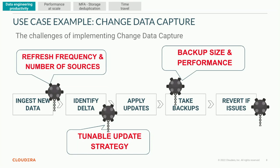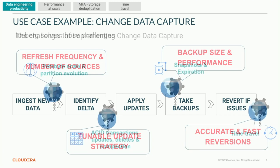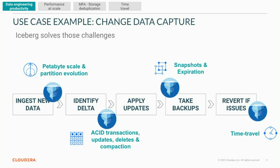There are a few landmines in the way. When ingesting new data, the refresh frequency and number of sources are exploding, making it very complex to get all that data ingested properly. Having a tunable update strategy to keep up with these changes is also a challenge. And when taking backups, that backup size is exploding, impacting performance. If we do get issues, we have to do complex manual tasks to roll back. The power of Iceberg means we can now move to petabyte scale, and with partition evolution, keep track of how data is changing and how we want to change our storage strategy — changing partitioning from monthly to daily or whatever is needed — Iceberg handles that first landmine.